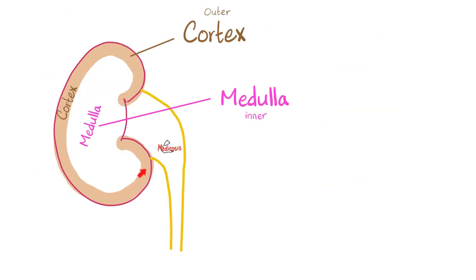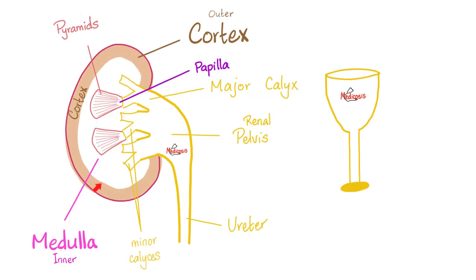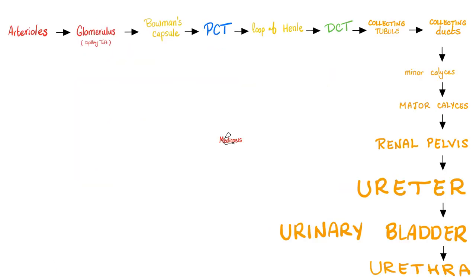Let's zoom out. The outer part of the kidney is the cortex (the crust), and the core is the medulla. Cortex on the outside, medulla on the inside. Starting from the ureter: go up to the renal pelvis (pyelo), then major calyx, minor calyces, into the pyramid. The tip of the pyramid is the papilla. Arterioles perfuse the kidney — afferent arteriole going to the glomerulus, efferent arteriole leaving the glomerulus. Then the nephron: Bowman's capsule → proximal convoluted tubule → loop of Henle → distal convoluted tubule → collecting tubule → collecting duct → minor calyces → major calyces → renal pelvis → ureter → urinary bladder → urethra.